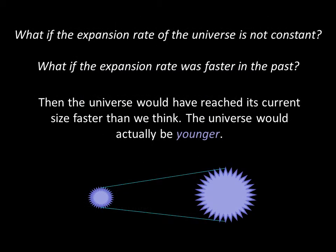We've been assuming a constant rate of expansion, but what if the universe was expanding more quickly in the past? If that were the case, then the universe would have reached its current size faster than we think — the universe would actually be younger. If the expansion rate of the universe is increasing, and we think it is — more on that later — then the age of the universe would be greater.